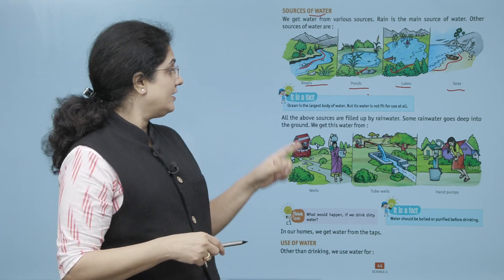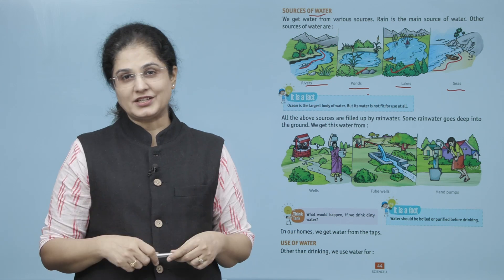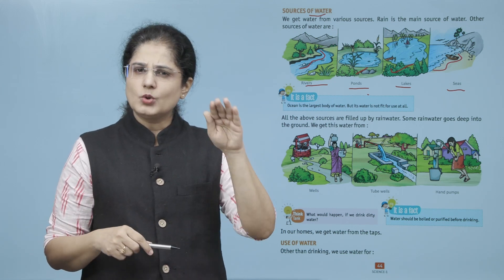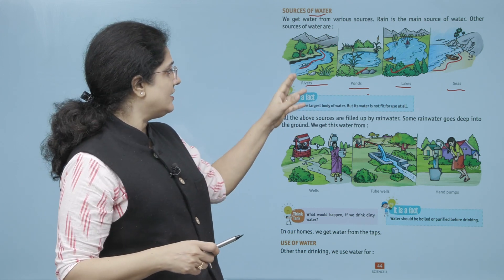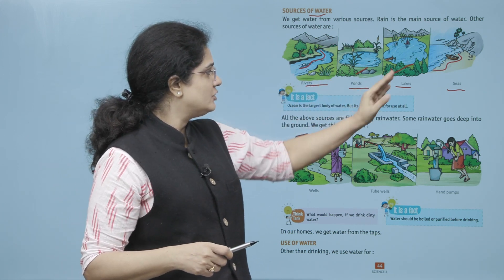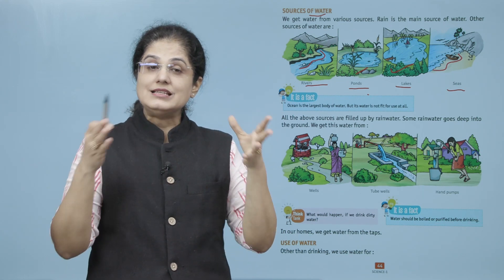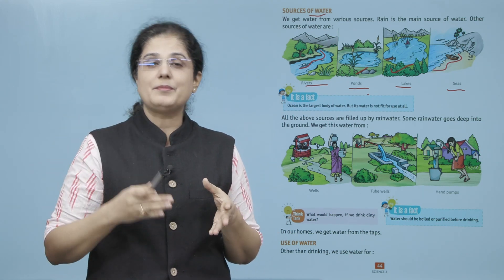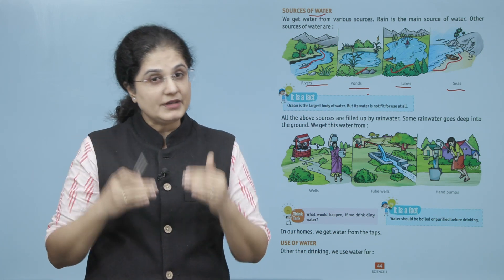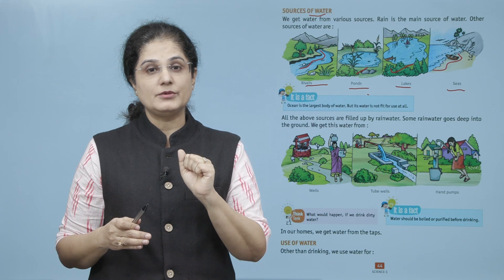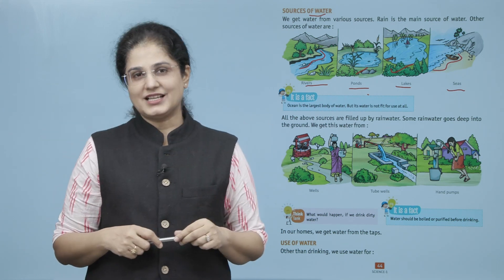Now all the above sources are filled up by rain water. Some rain water goes deep into the ground. Ye sare joh sources hai — nadhi, talab, jheel aur samudr — in sab meh baarish ka paani bharata hai. Aur kuch rain water aisa bhi hota hai jo zameen se niche chala jata hai.